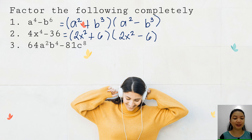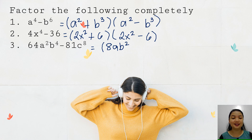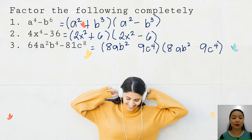Next: 64a squared b to the fourth minus 81c to the eighth. The square root of 64a squared b to the fourth is 8ab squared, since the square root of 64 is 8, a squared gives us a, and b to the fourth gives us b squared. The square root of 81c to the eighth is 9c to the fourth. The other factor is also 8ab squared and 9c to the fourth. Do not forget to write the symbols — one must be positive, the other is negative.